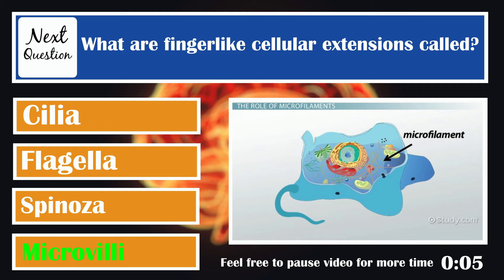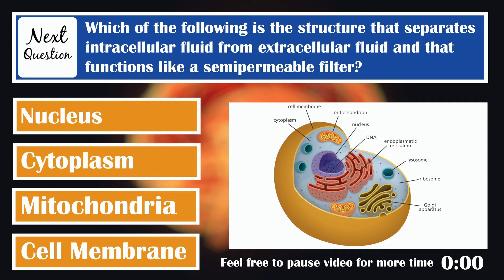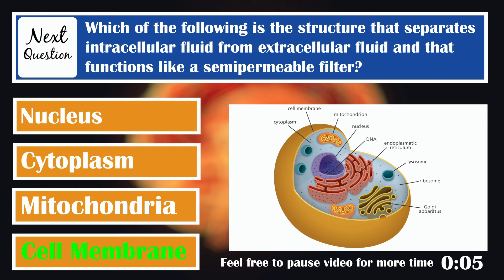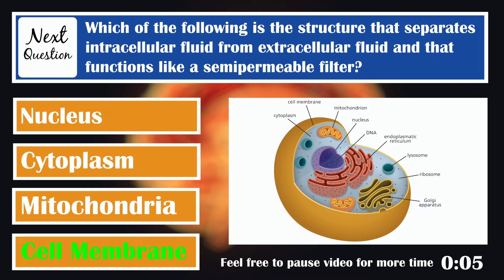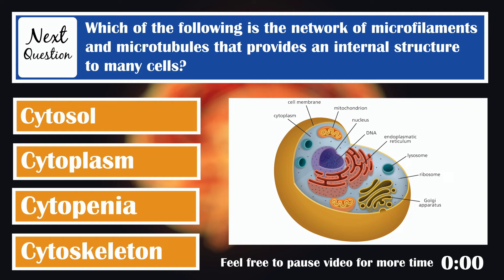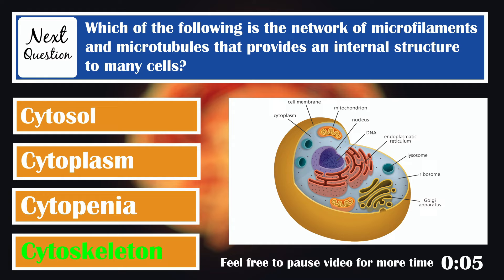Which of the following is the structure that separates intracellular fluid from extracellular fluid and functions like a semi-permeable filter? The cell membrane is a semi-permeable filter and may contain openings that function like gates in a fence, allowing some materials to pass freely while blocking passage to others. Which of the following is the network of microfilaments and microtubules that provide an internal structure to many cells? The cytoskeleton. This network serves as a scaffolding material to provide an internal structure to the cell.